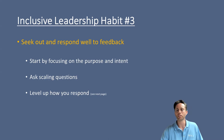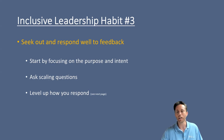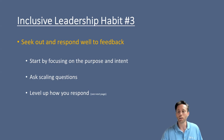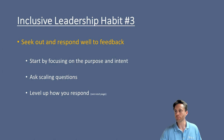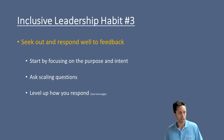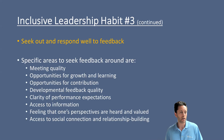Ask scaling questions. For example: on a scale of one to ten, how well do you think I facilitated that meeting? Most of the time you'll hear a seven or eight when people are uncomfortable sharing the truth. But the second question is the magic: what would it take to increase that score by one point? Maybe you'll hear something like, 'you could have called on more people to include their voices,' or 'you could give people the opportunity to express themselves asynchronously before the meeting starts.' Those are micro steps in the right direction.